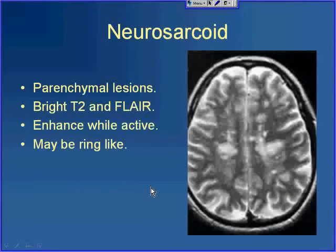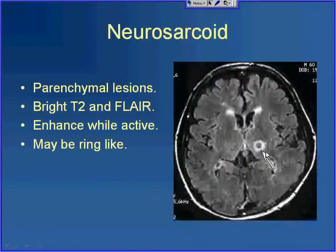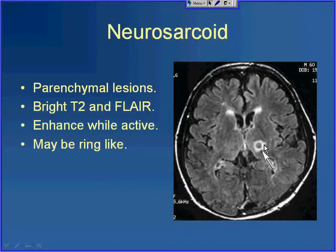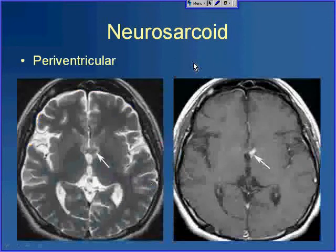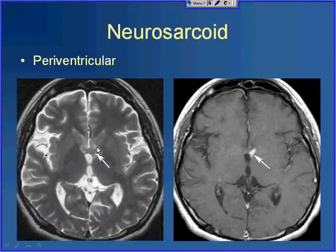Sarcoid can also rarely produce parenchymal lesions that are bright on T2 and FLAIR-weighted imaging and can enhance when active. The enhancement can even be rim-like, though we don't typically include sarcoid in the ring-enhancing lesion differential. Sarcoid also likes to go to the periventricular regions. Here is an example of an isodense lesion adjacent to the third ventricle with surrounding T2 hyperintensity corresponding to edema.